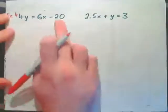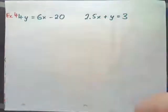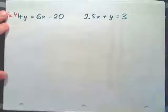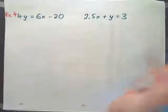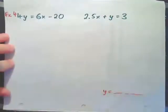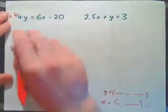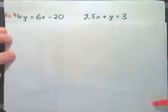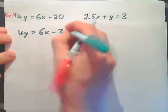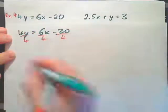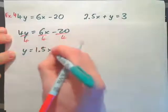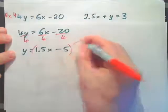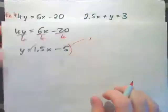Example 4: 4y equals 6x minus 20, and 2.5x plus y equals 3. This time we don't have apples and bananas, but it's the same procedure — find the values of x and y. For substitution, we need either y equals something or x equals something. One option is to solve the first equation for y by dividing everything by 4, giving y equals 1.5x minus 5.